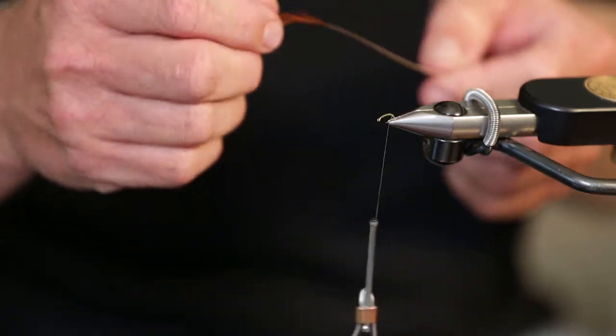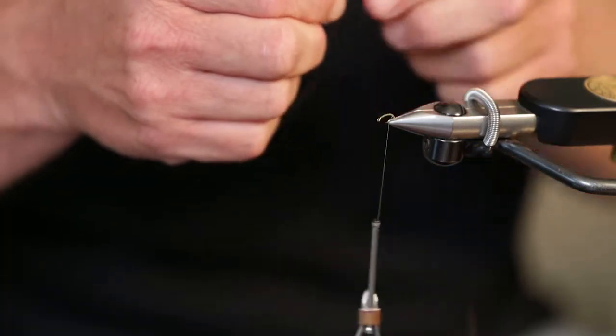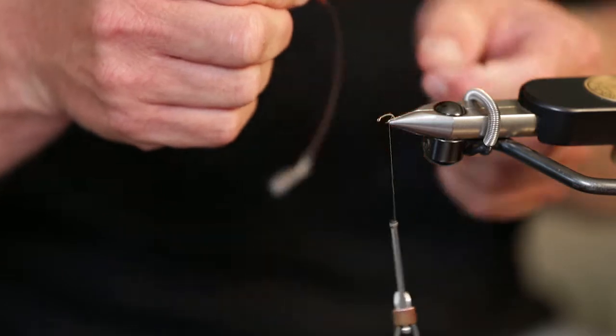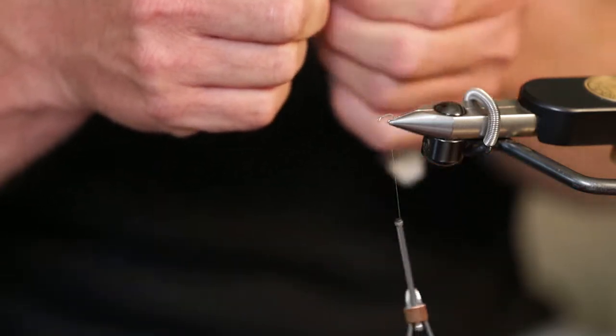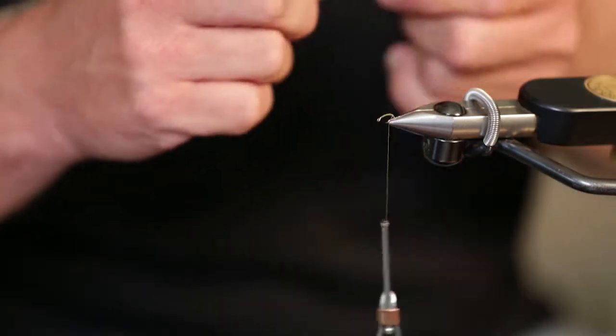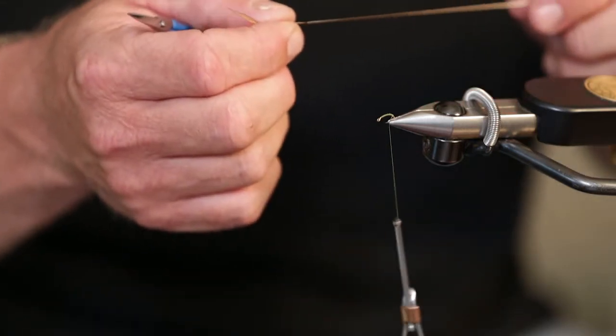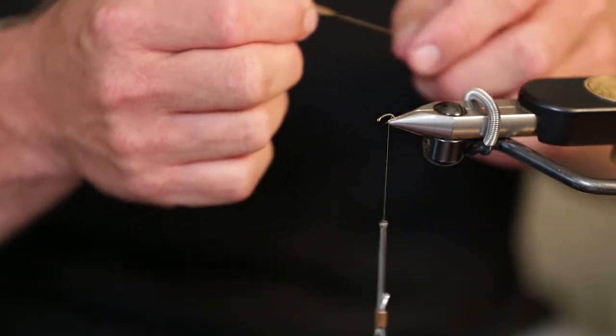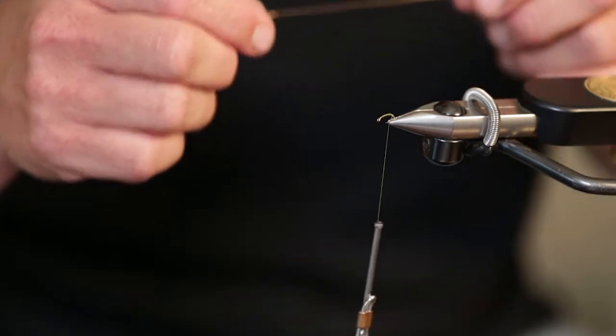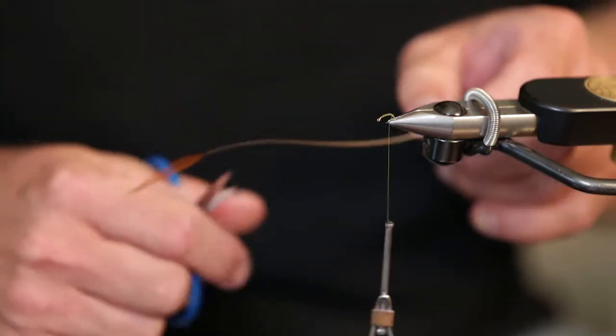So we're going to take a brown hackle and strip it. If you don't have brown hackle and you're just looking for something to tie this fly, you could get an inexpensive Indian neck. Or if you've got some dry fly necks laying around, the feathers in the back of your dry fly neck would work well for this as well.